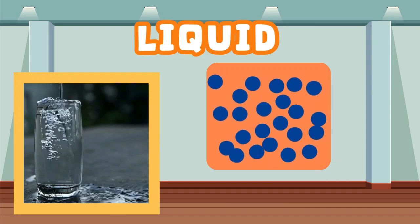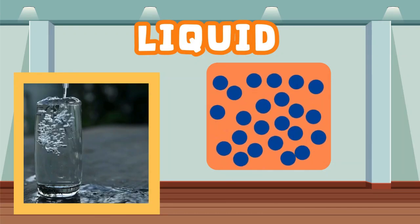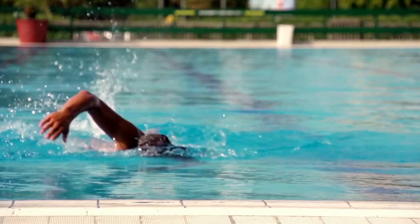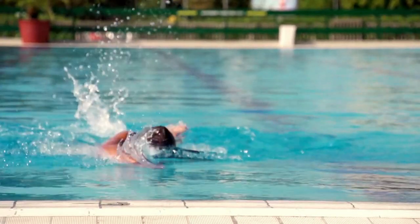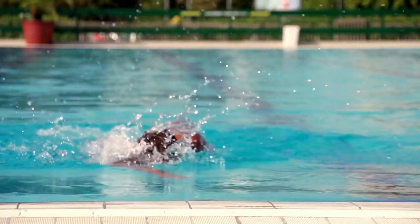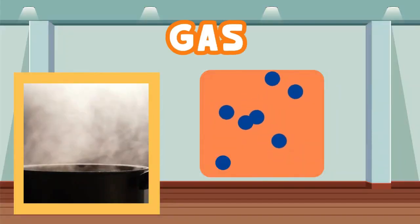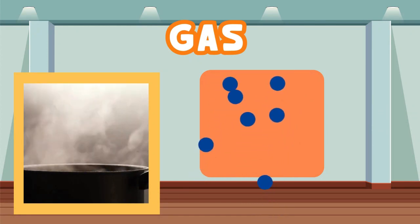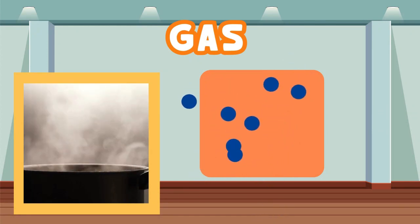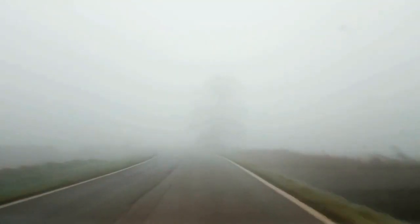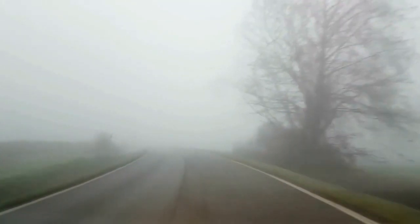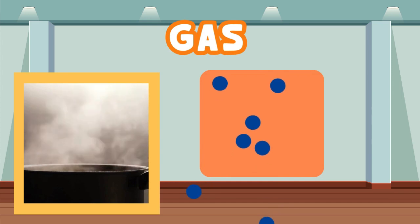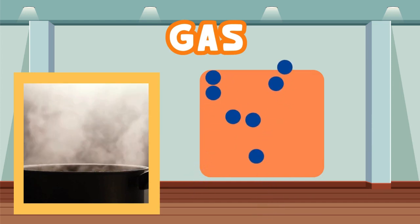The atoms in liquids are still connected to each other, but not as tightly as in solids. The atoms can slide past each other — that's why you can swim in water, because the atoms are free to slide past when you move. The atoms in gas are not held together at all, so they can move about freely. That's why you can drive or move through fog — the atoms are moving far more freely than in water, so we can move through fog or air without much effort at all.